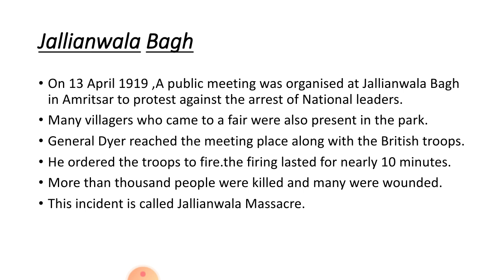That was all about this chapter and Mahatma Gandhi's Satyagrahas. In this chapter, we read about four Satyagrahans run by Mahatma Gandhi in India — Champaran, Khera and Ahmedabad Satyagraha — and then the incident of Jallianwala Bagh. I hope you all understood this chapter very well. In the next part, we will read about the Non-Cooperation Movement and Civil Disobedience Movement. Thank you.